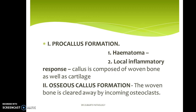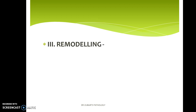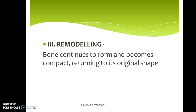The next step is osseous callus formation. The woven bone is cleared away by incoming osteoclasts. This is followed by a stage of remodeling, where the bone continues to form and become compact, returning to its original shape. This may take months to years.